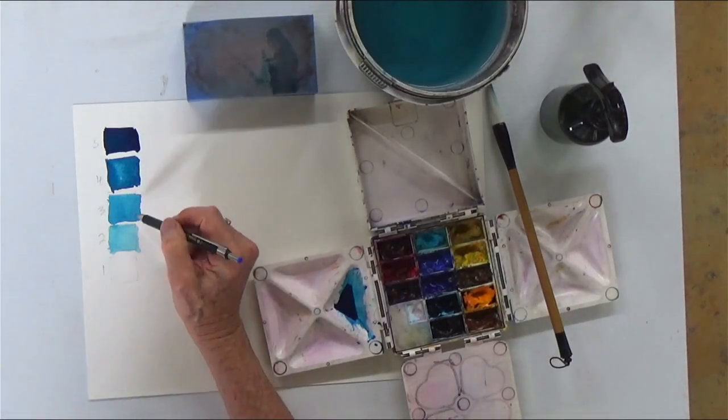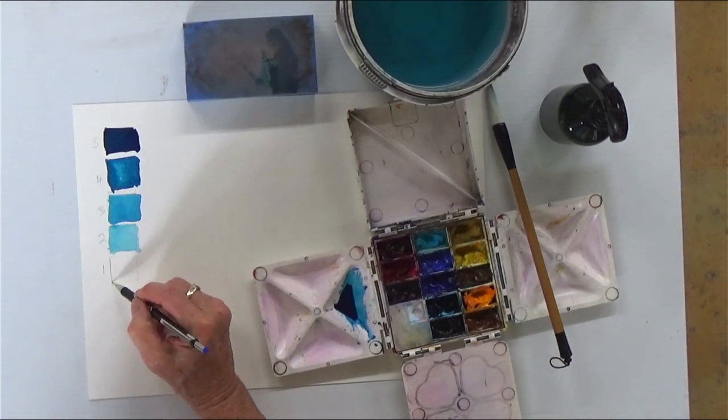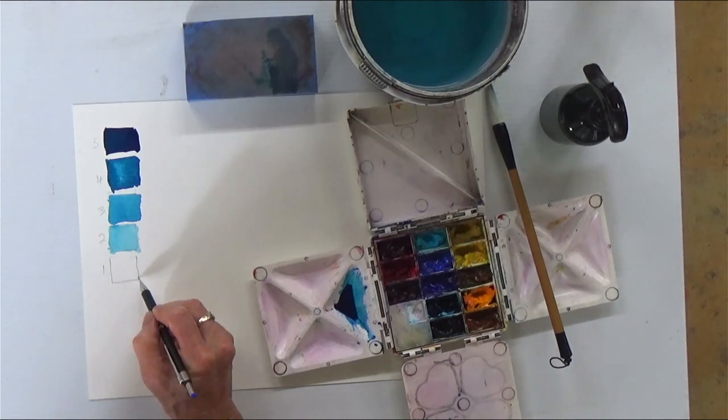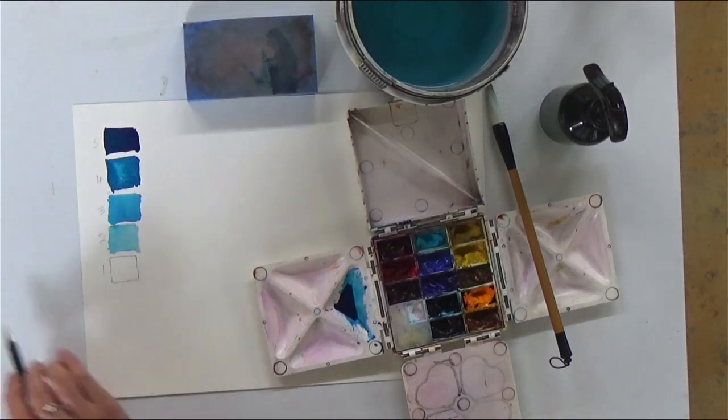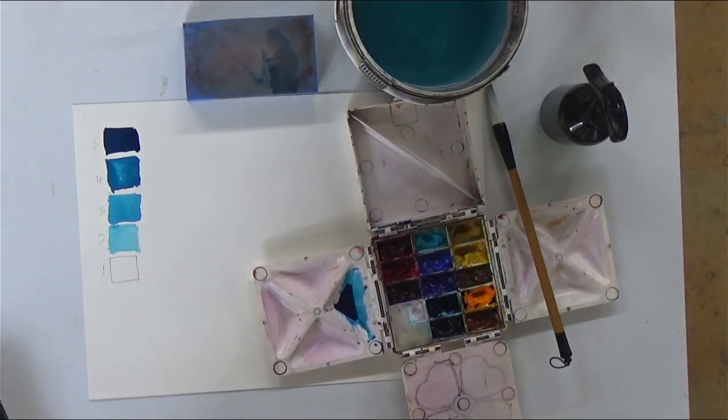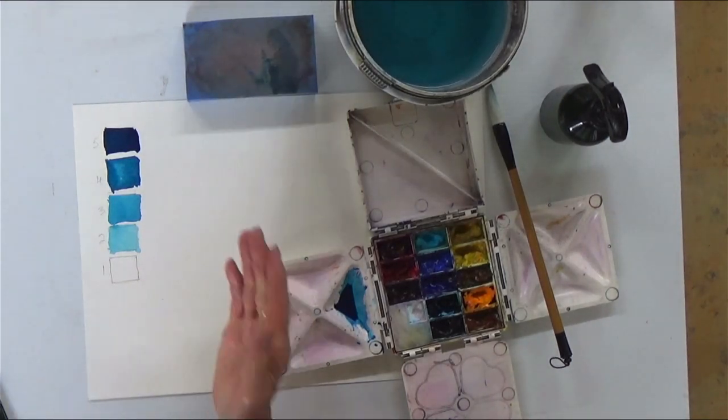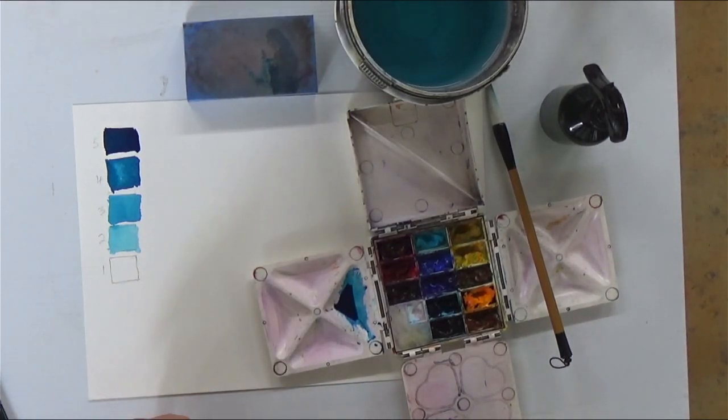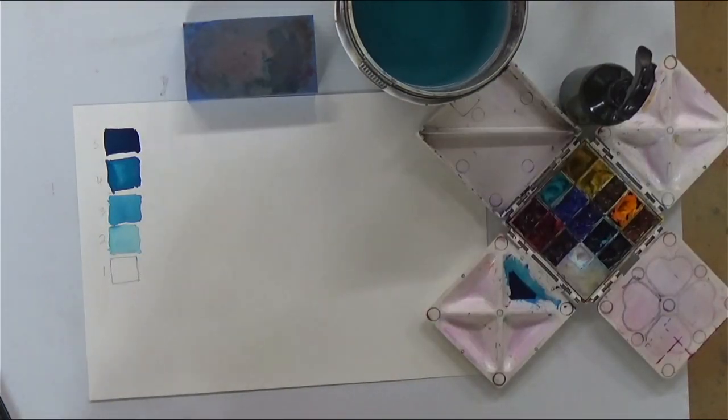And there we have five tones of color. So five, four, three, two, one and the one will remain unpainted paper. So there we go. That is the first lesson. If you can do that, you will be able to paint anything.